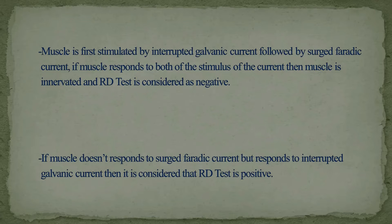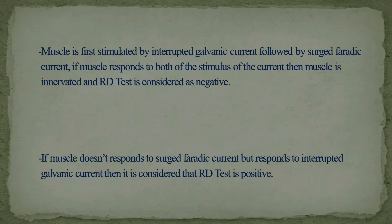The muscle is first stimulated by interrupted galvanic (IG) current, followed by surge faradic (SF) current. If the muscle responds to both stimuli, it is innervated and the RD test is negative. If the muscle does not respond to surge faradic current but does respond to interrupted galvanic current, the RD test is considered positive.